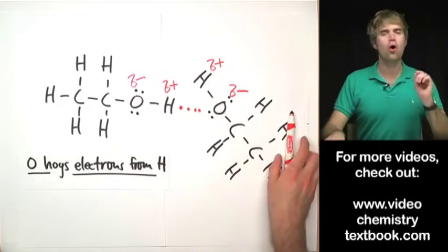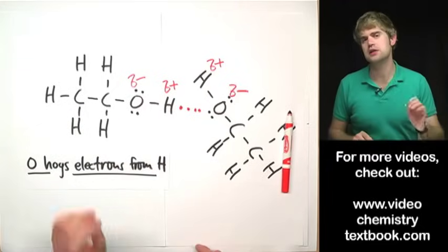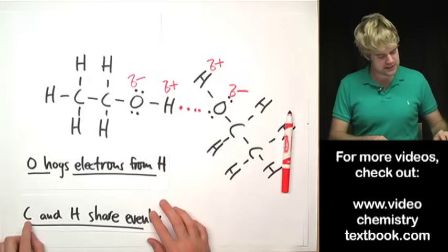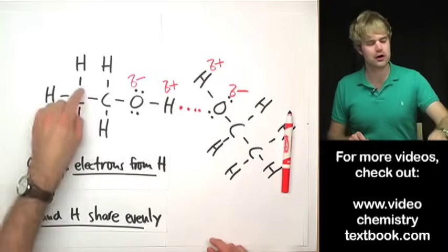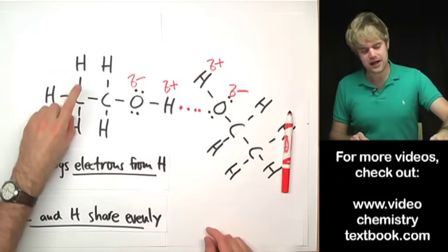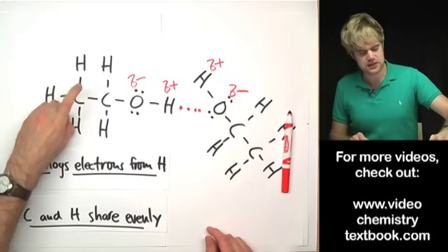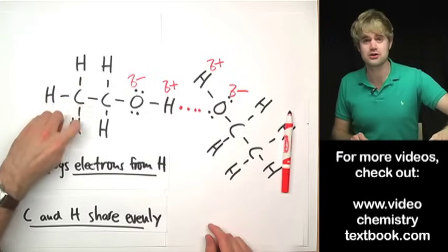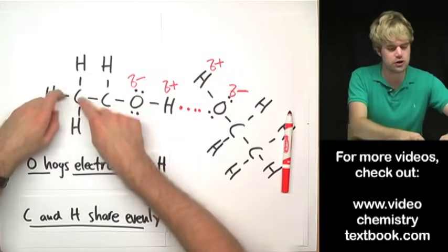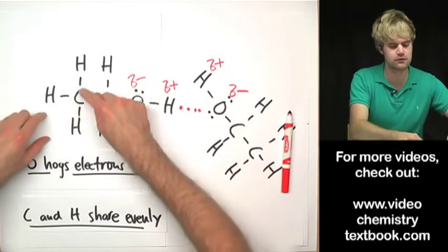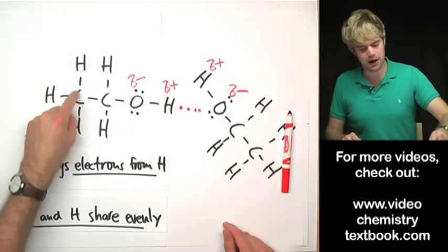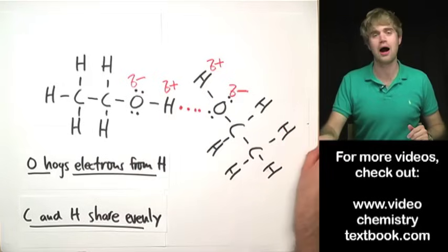Earlier I said that if an H is bonded to a C it will not form a hydrogen bond — here's why. It's because C and H share their electrons evenly. Because they're sharing evenly, it's not possible for the C to become negative and the H to become positive, since the electrons spend equal time with both of them. So you don't get these delta charges when H is bonded to C, and without charges, C-H bonds can't form hydrogen bonds.